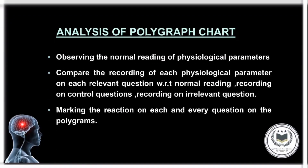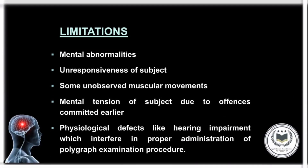Analysis of the polygraph chart: first, observe the normal reading of physiological parameters, then compare the recording of each physiological parameter on each relevant question with respect to the normal reading, or the reading on control questions. Then mark the reaction on each and every question on the polygram.